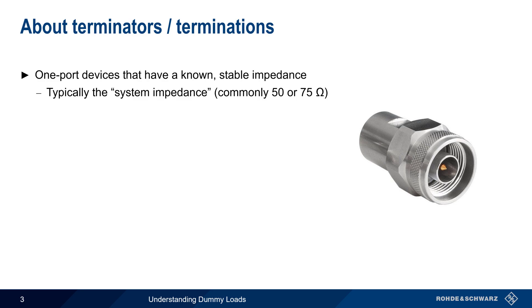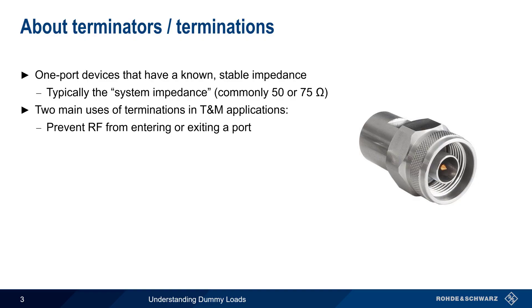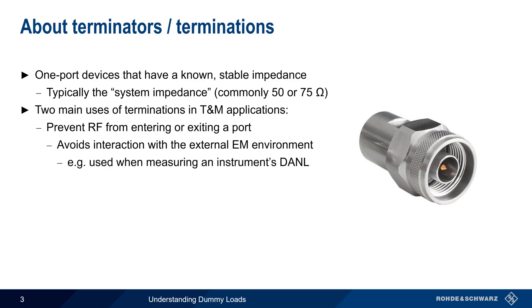Terminators are widely used in many applications, but there are two main ways that terminators are used in RF test and measurement. The first is to prevent radiofrequency signals from entering or exiting a port, thus helping to avoid interaction with the external electromagnetic environment. One example is when measuring the displayed average noise level, or DANL, of a spectrum analyzer — we want to be measuring the analyzer's internally generated noise, not external noise received via the analyzer's open RF input.